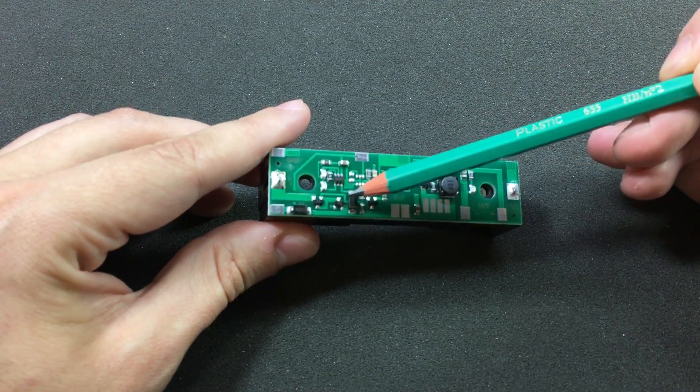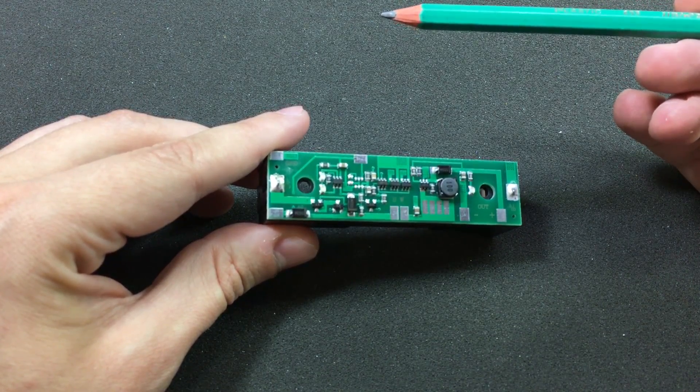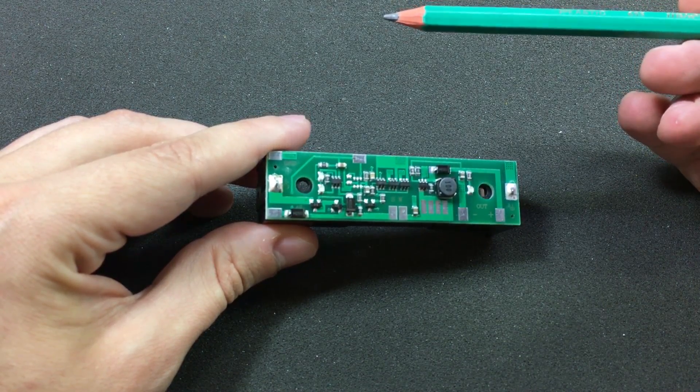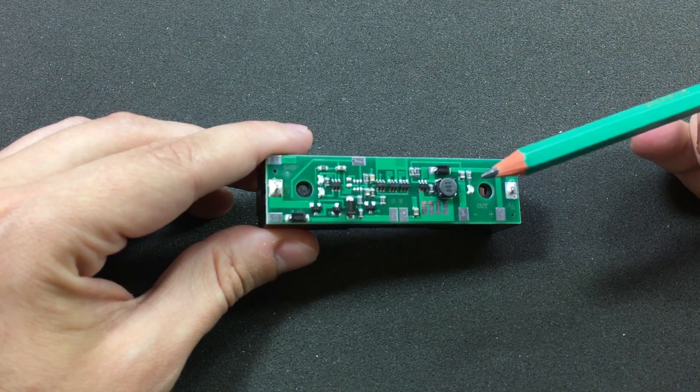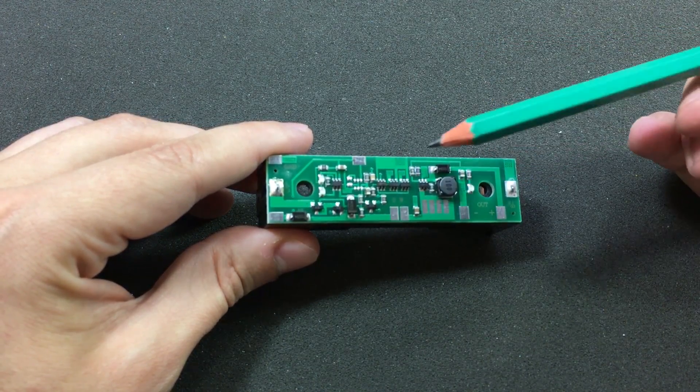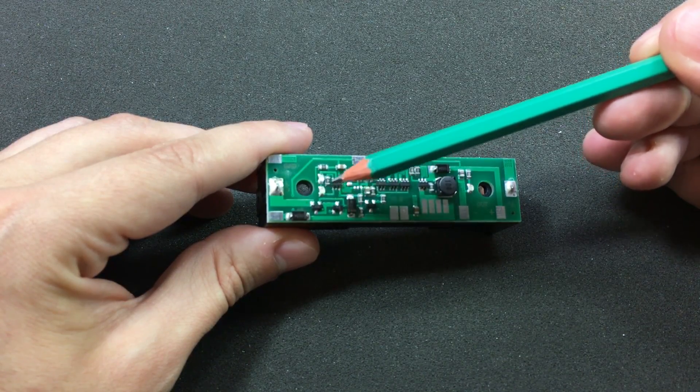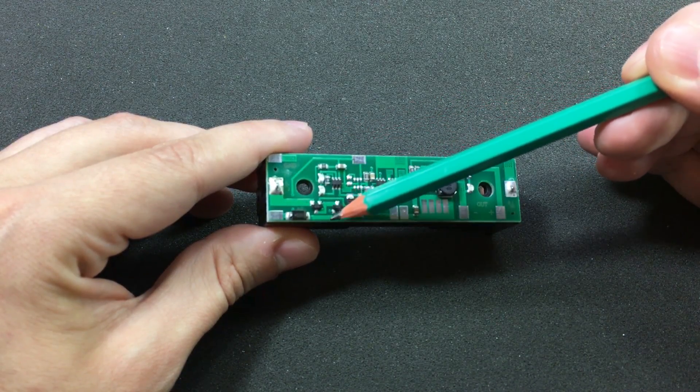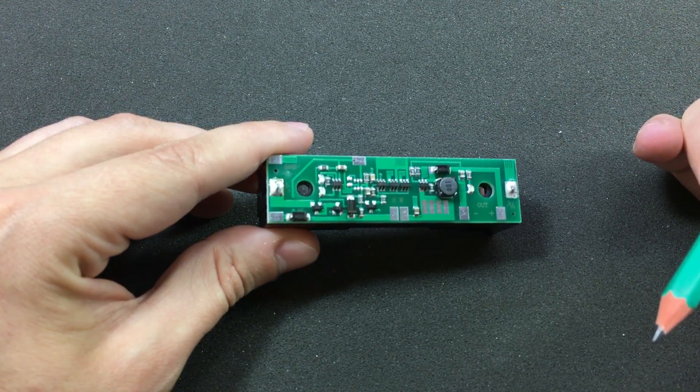These other two guys right here are also SOT23 devices and are marked S5. I think those might be P-MOSFETs related to the charging of the battery. The way I see the connections, you can either connect the positive of the battery to the 5V rail or disconnect it with this bidirectional switch.